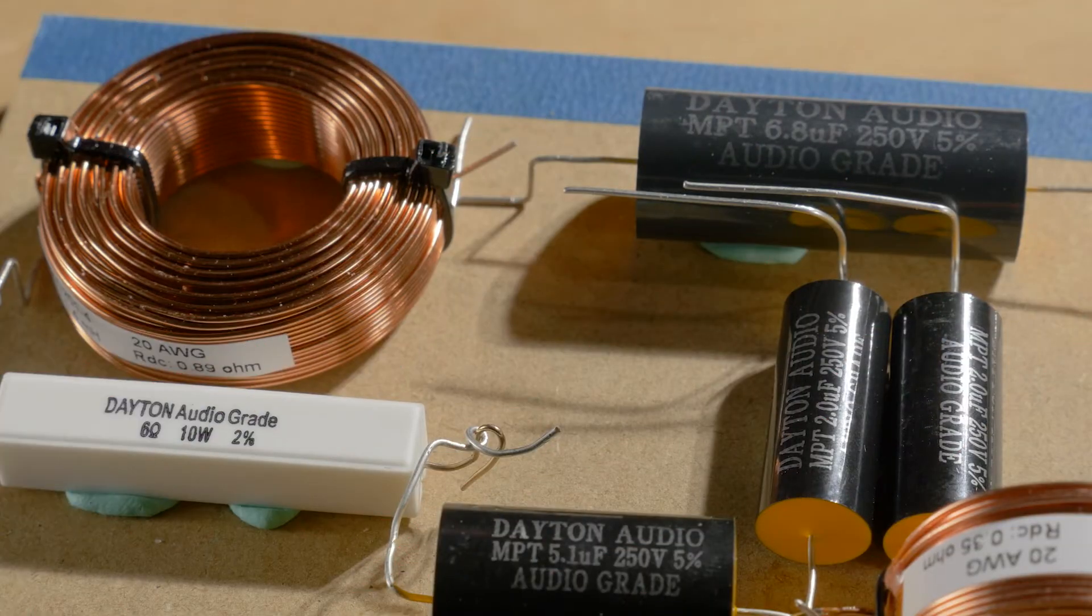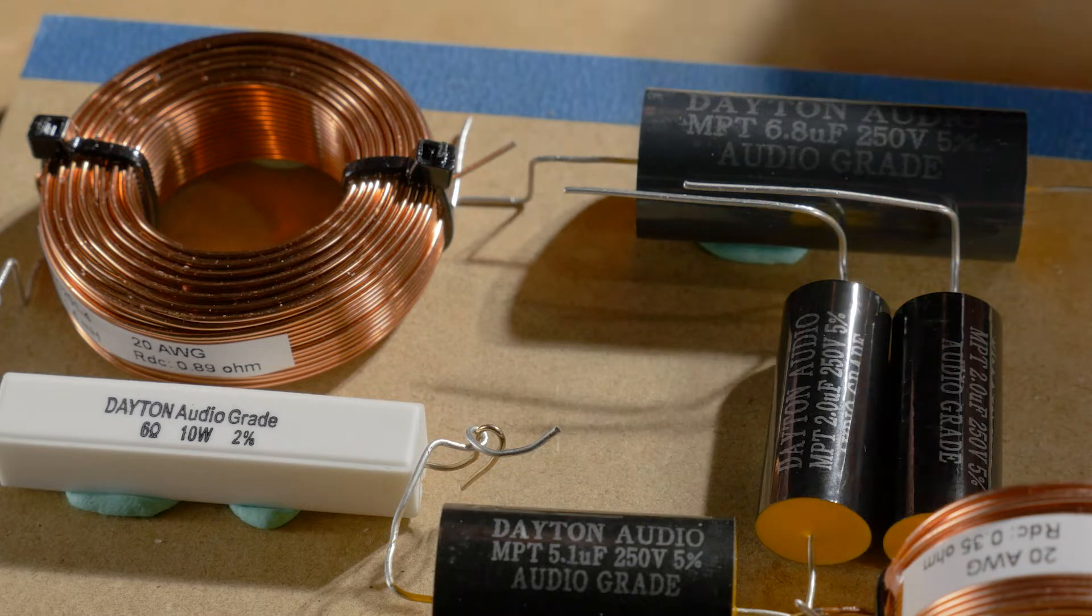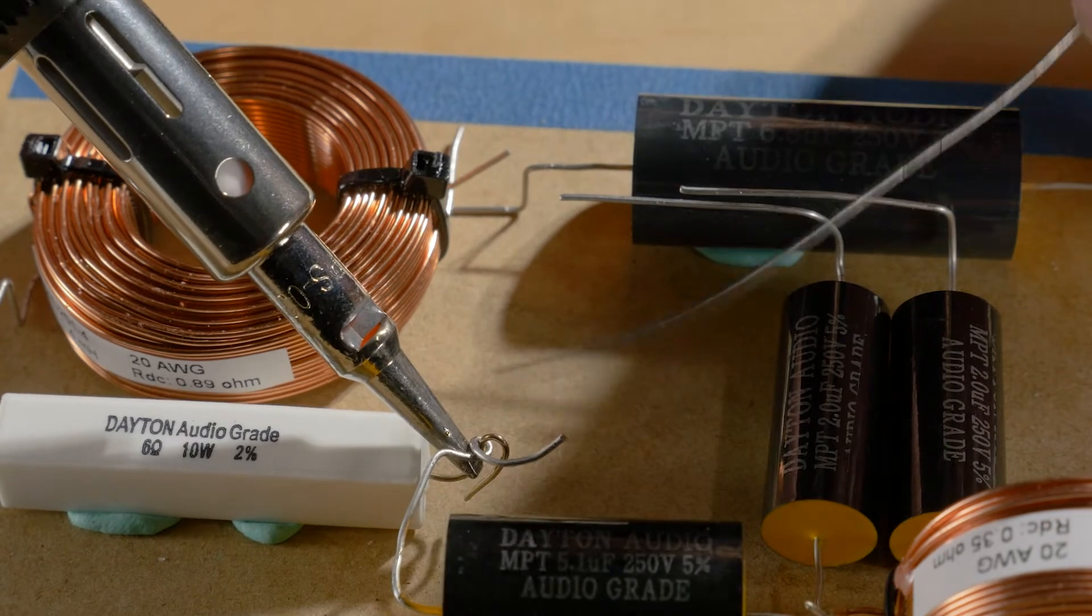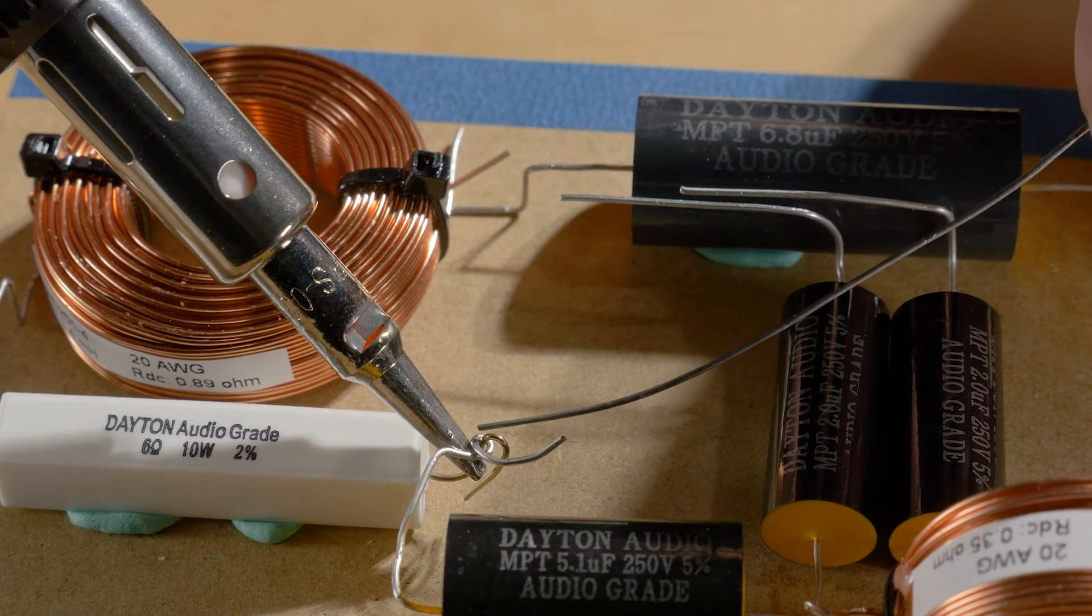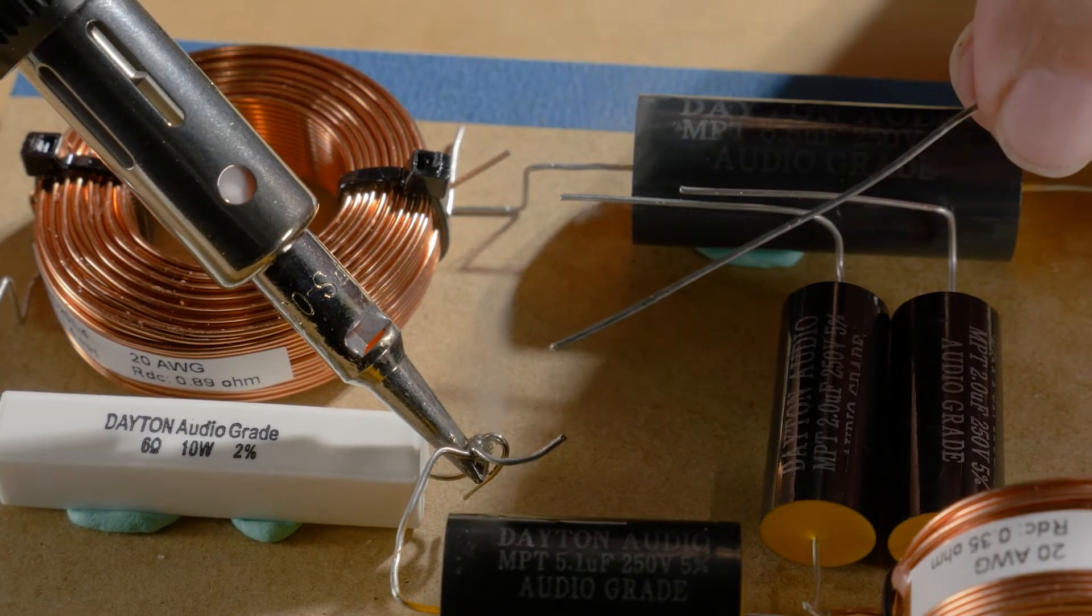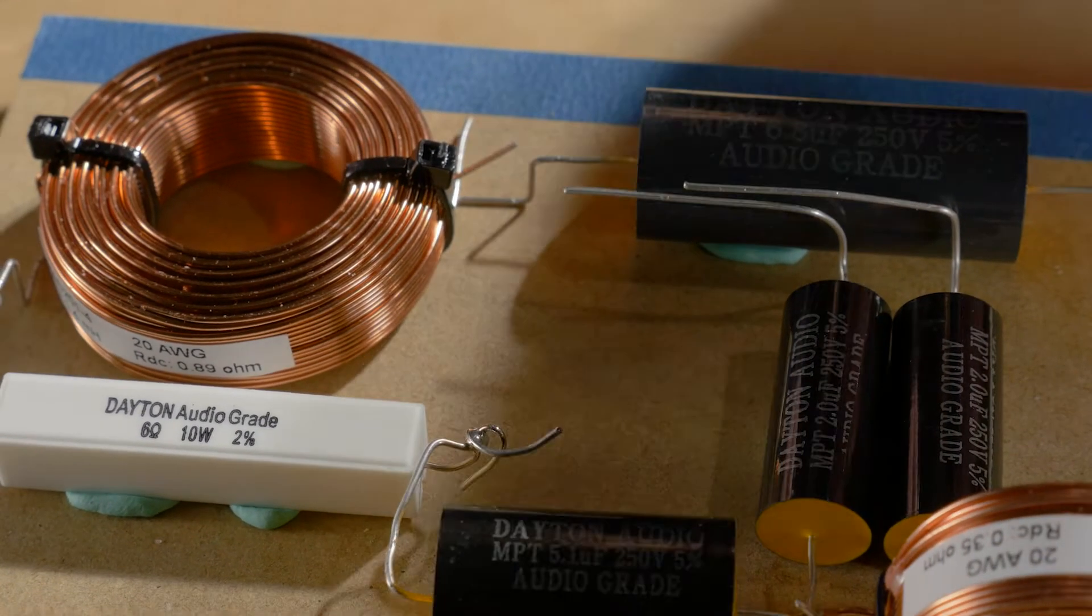When you get in and solder in your components, what you're going to want to do is heat up the legs with your soldering iron and then feed the solder directly on the legs. The solder will flow over that and you get really good solder joints that way.